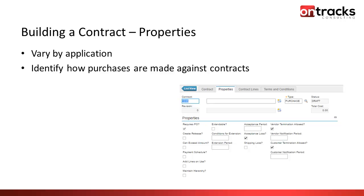The properties tab sets the rules that govern what you can do with the contract once it's approved. For a purchase type contract, we always need a PO — it's checked by default and read-only. We can either create release POs directly from the contract, maybe auto-approved without going through the approval process each time, or reference a contract on POs created through the normal course of your supply chain processes.